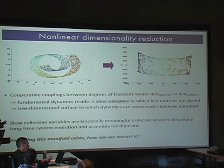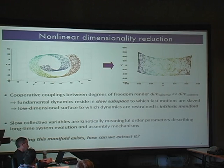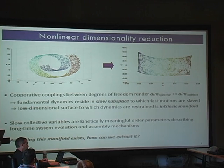This manifold exists in all the systems we've studied — you have cooperative couplings between degrees of freedom — and it's typically pretty low-dimensional: two, three, four, five, or six dimensions. Let me show you some examples of that.